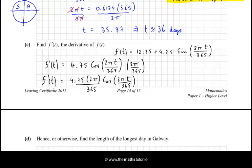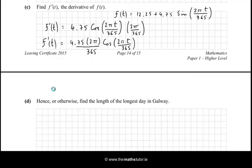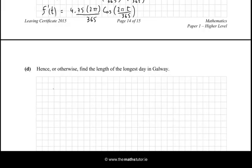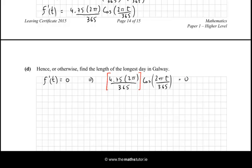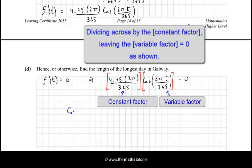So hence or otherwise, find the length of the longest day. I just need the derivative for this. To find the length of the longest day, this is a function where I need to find the max. So you differentiate and make it equal to 0. So let's take our derivative, make it equal to 0. And that means that 4.75 times 2π/365 cos(2πt/365) is equal to 0. If you think about it, we have two factors here. We have this factor on the left and we have another factor here on the right. So all I need to do is solve cos(2πt/365) equal to 0.